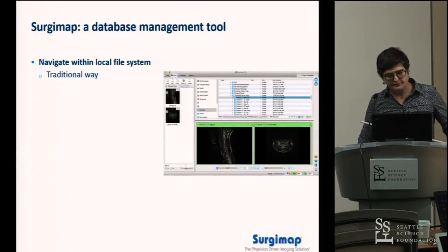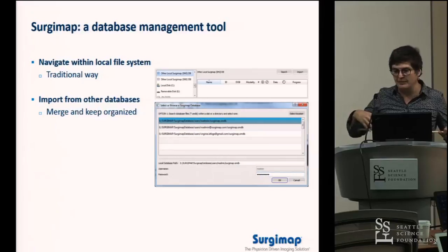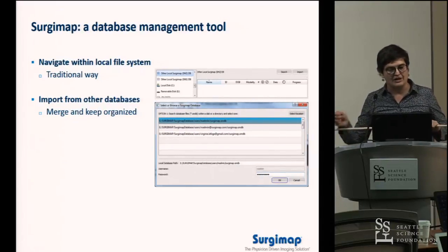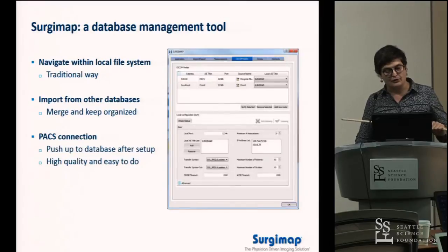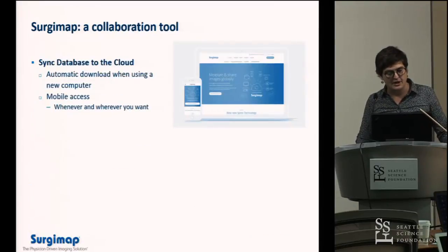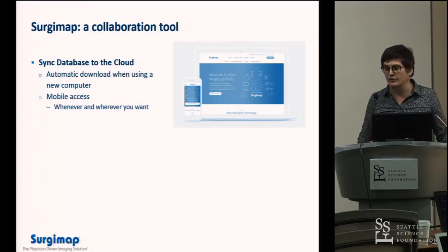Beyond measuring the film, you also need to organize it. There's a database where you can store all your cases, share them, and import from a PAC system or another SurgiMap database. If you have a JPEG you can perform the same measurements. You can save all your measurements on the cloud, meaning anywhere you have internet access, you can view your films and your surgical strategy.